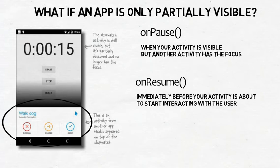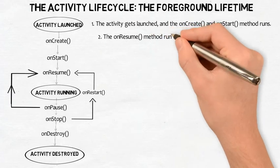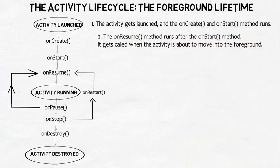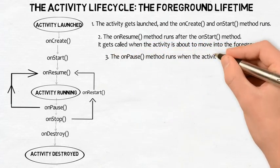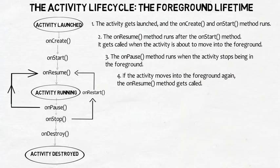Let's see how these methods fit in with the rest of the lifecycle methods — the activity lifecycle, the foreground lifetime. The activity gets launched and the onCreate and onStart methods run. At this point the activity is visible but doesn't have the focus. The onResume method runs after the onStart method and gets called when the activity is about to move into the foreground. After the onResume method has run, the activity has the focus and the user can interact with it. The onPause method runs when the activity stops being in the foreground; after it runs, the activity is still visible but doesn't have the focus. If the activity moves into the foreground again, the onResume method gets called. The activity may go through this cycle many times.